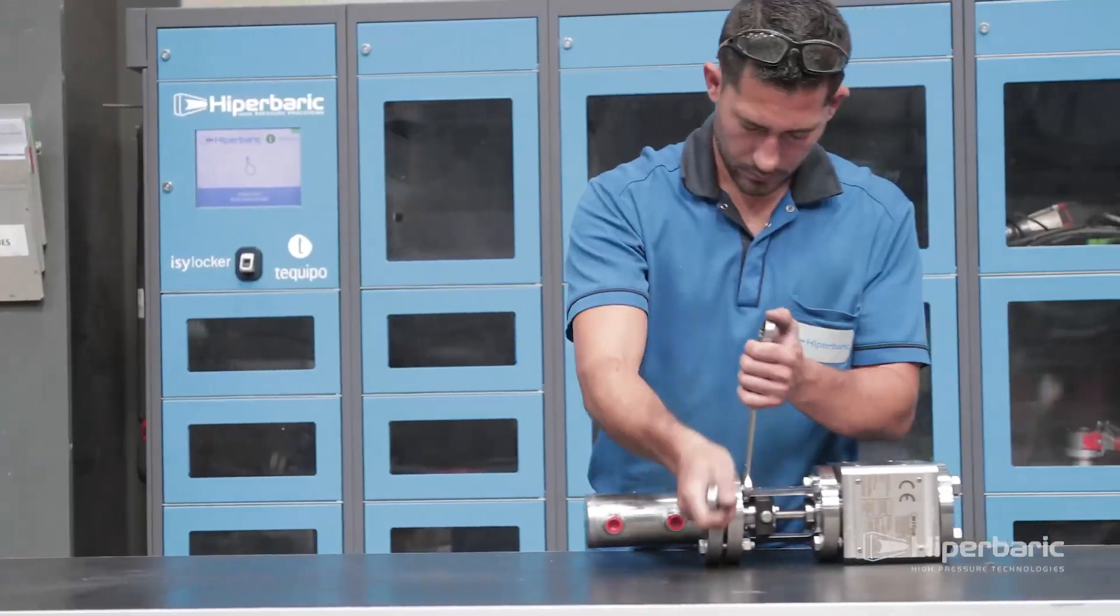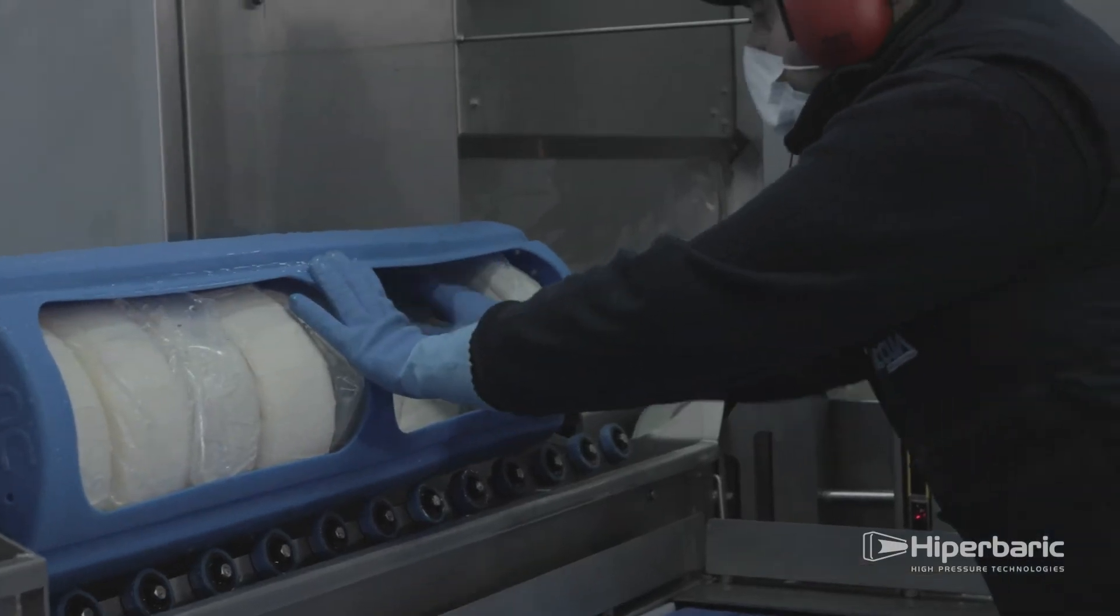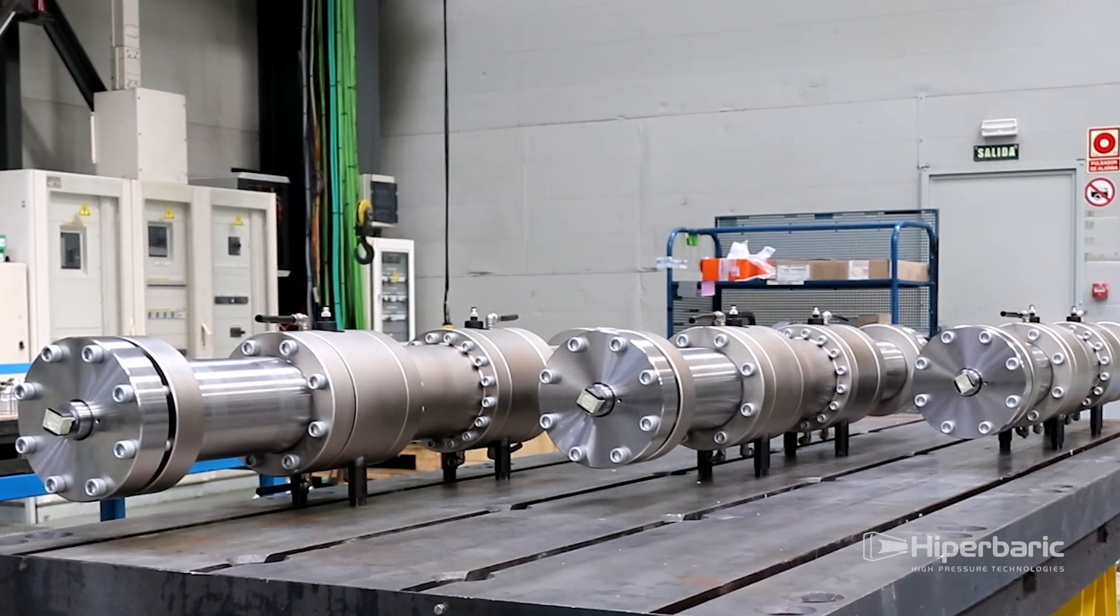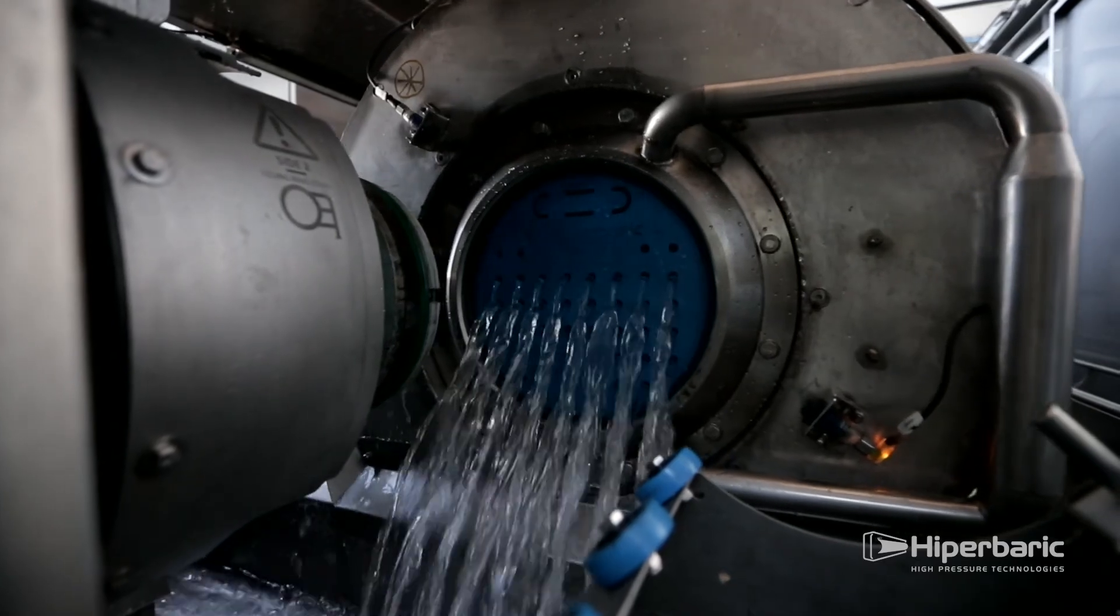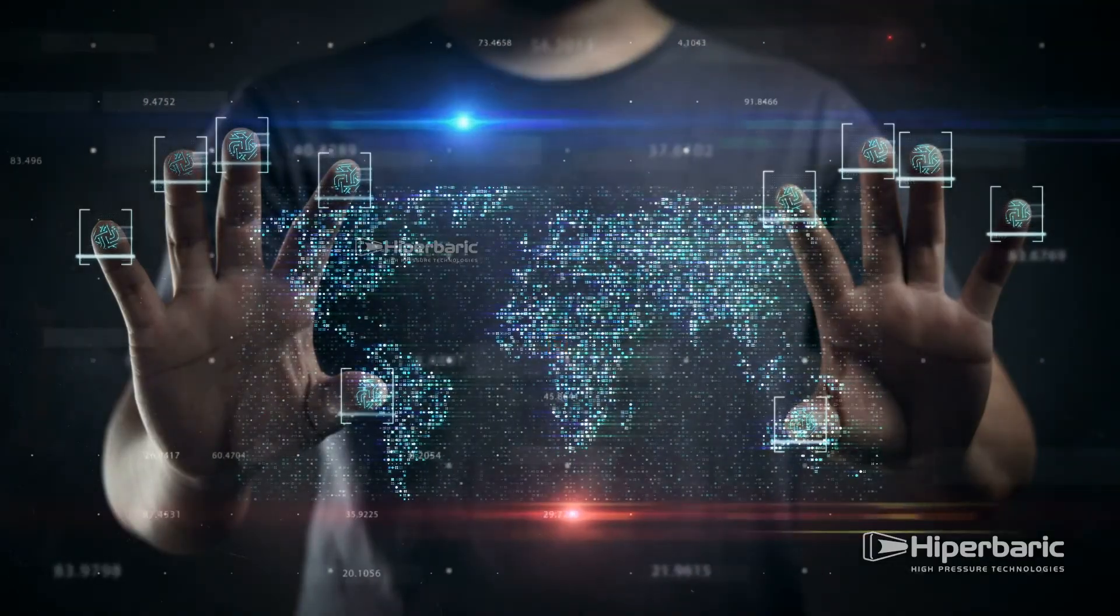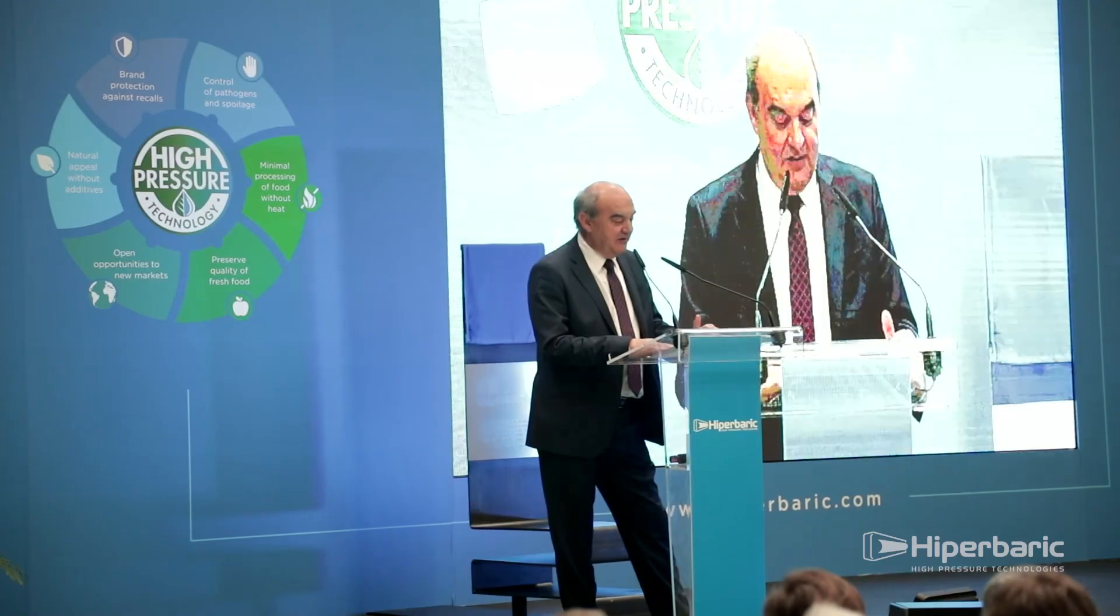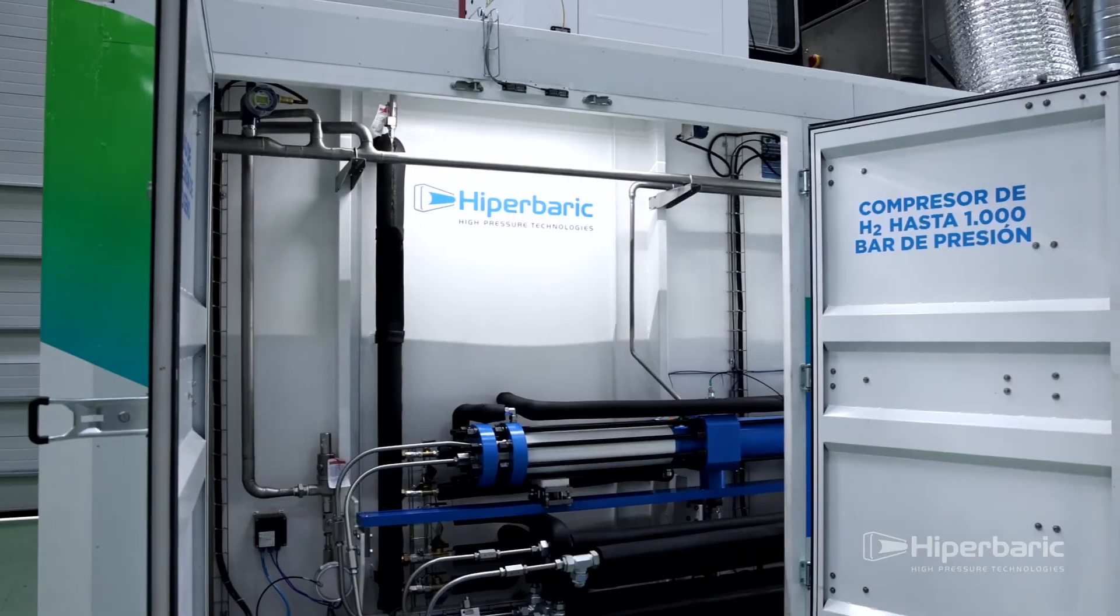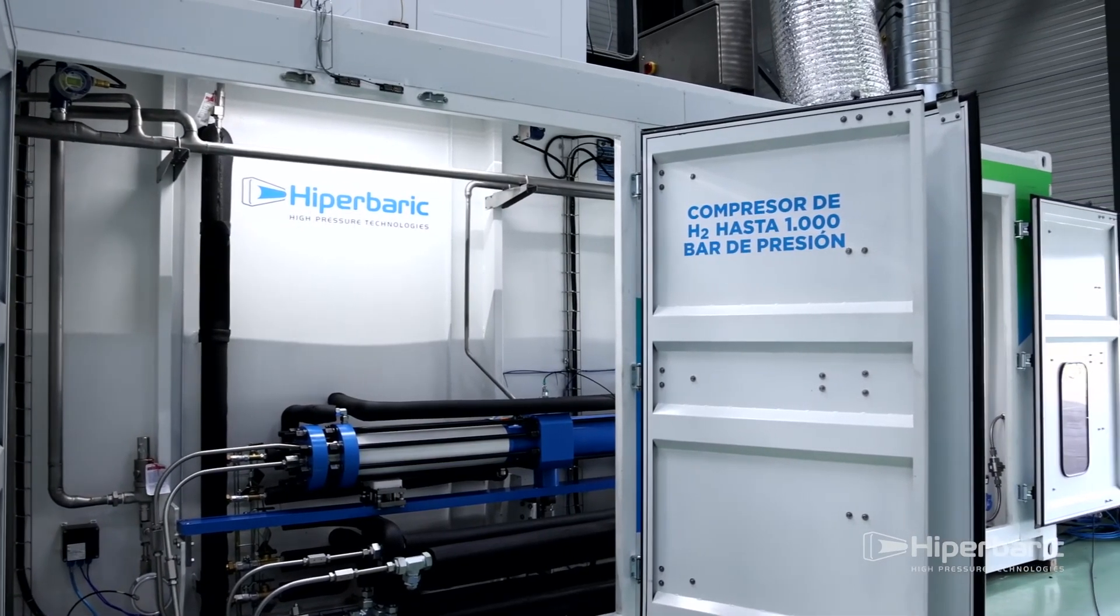Hyperbaric is the global leader in the development of high-pressure technologies for different sectors and applications. It has more than 1000 water compressors that reach up to 6000 bar for the application of high-pressure processing, installed in more than 50 countries on 5 continents. With this vast experience, the company has a strategic role in the renewable hydrogen value chain, proposing high-pressure hydrogen compressor units up to 1000 bar.